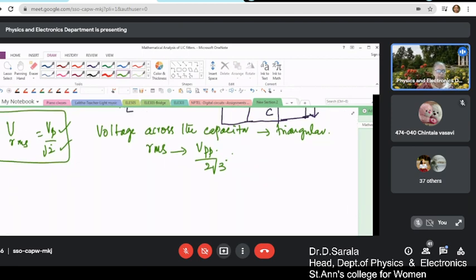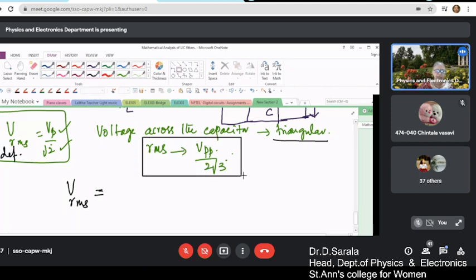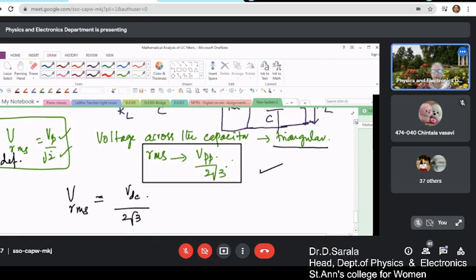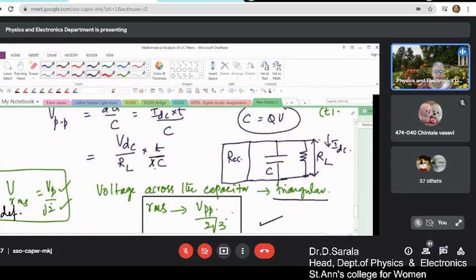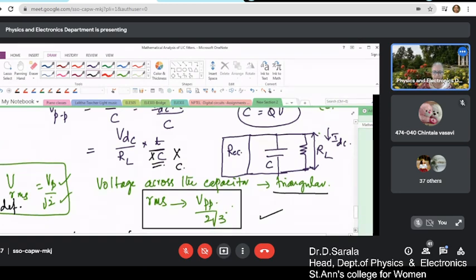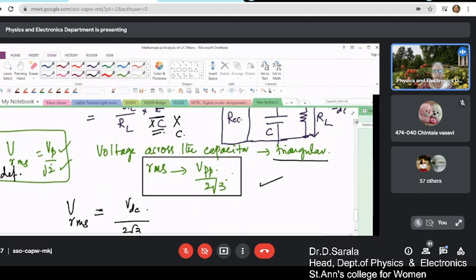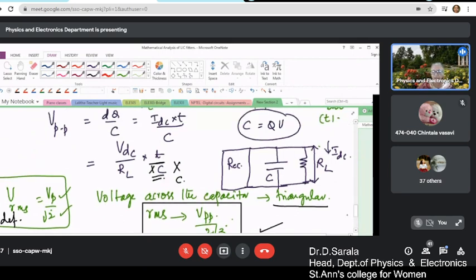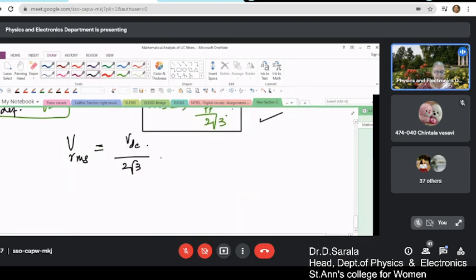Therefore, your RMS value - these are to be taken for granted because we are not doing the derivation for this. This we will see in the later process. So, for the present take this - you already know but this definition is modified for a triangular rate like this. So, take it for granted. Then it will be V_DC by 2√3 - this is X_C. There is a print mistake in your textbook. Correct it. It is X_C. Both of them are parallel to each other. So, when you simplify what you are getting is X_C. What is X_C? 1/2πfC, isn't it? So, voltage is across X_C.